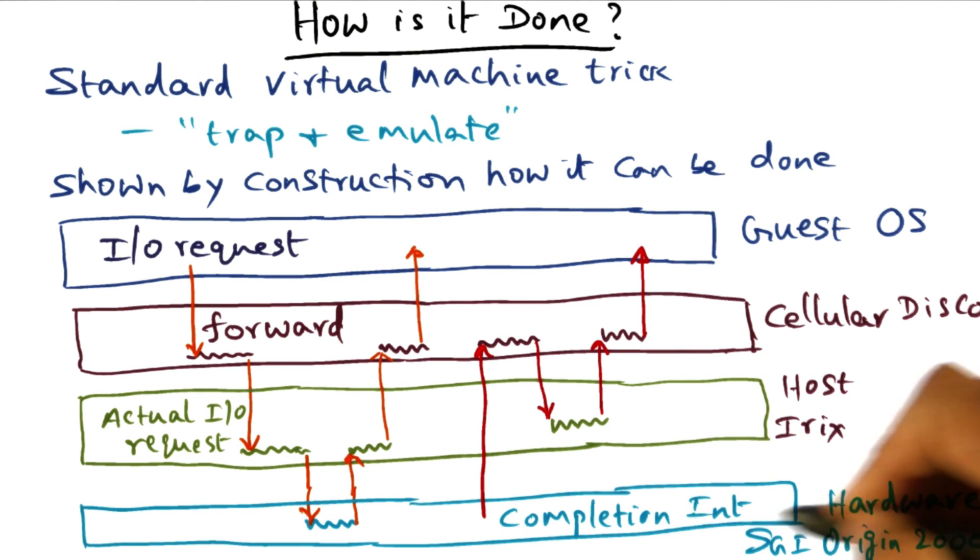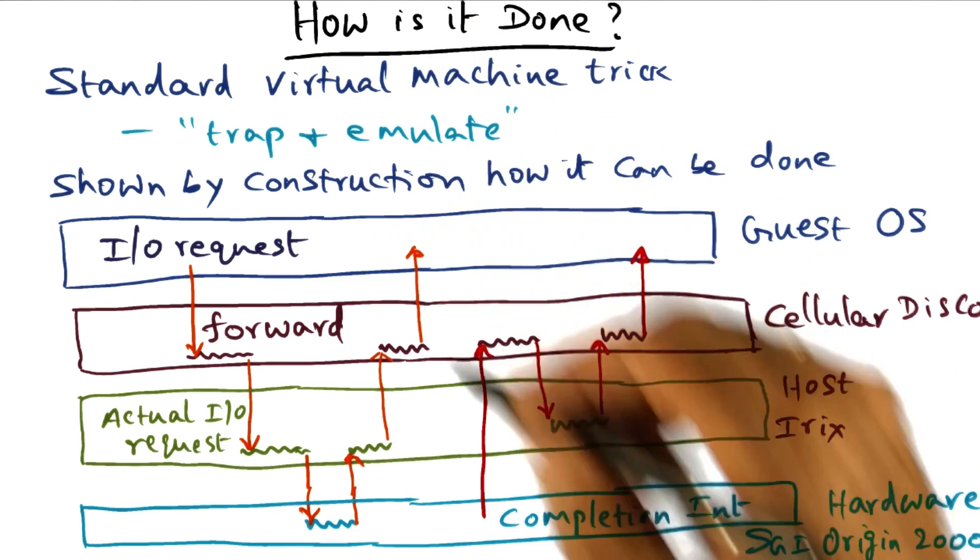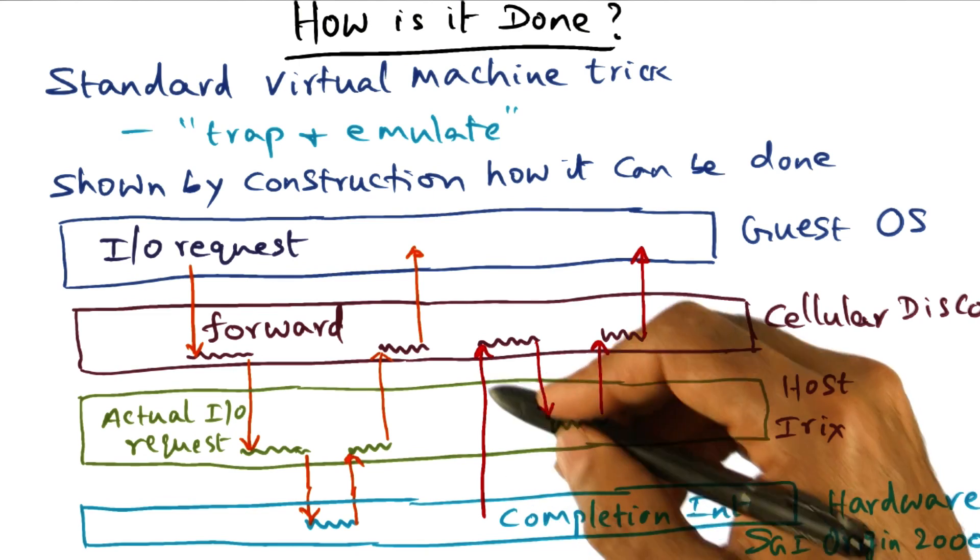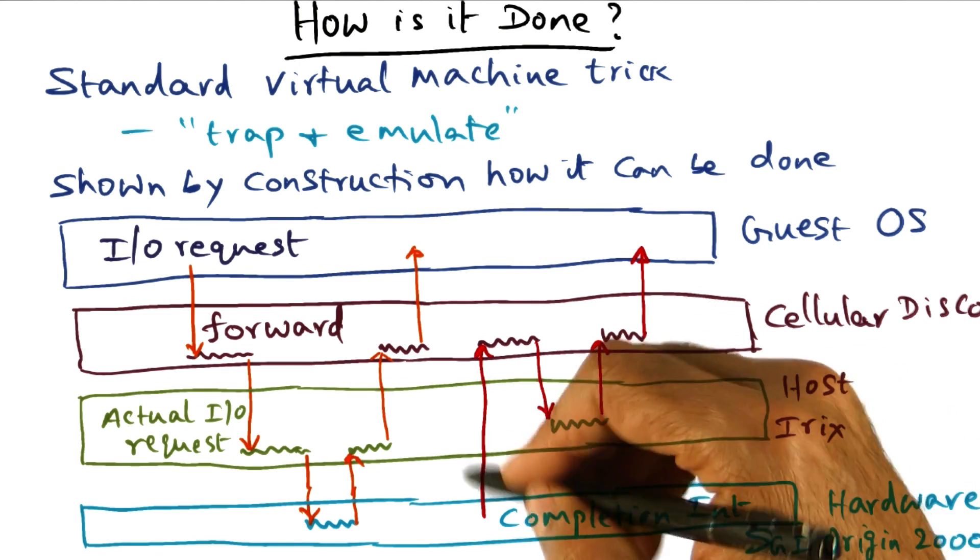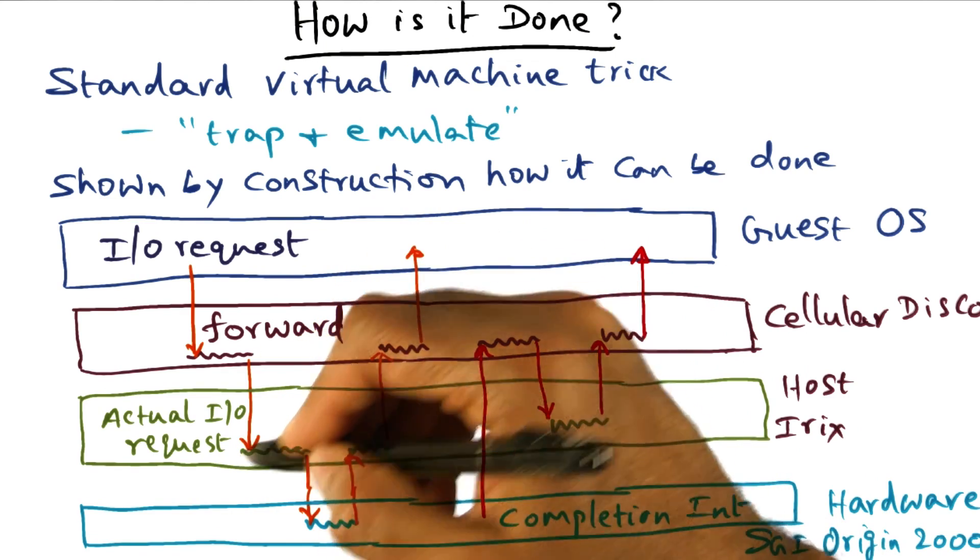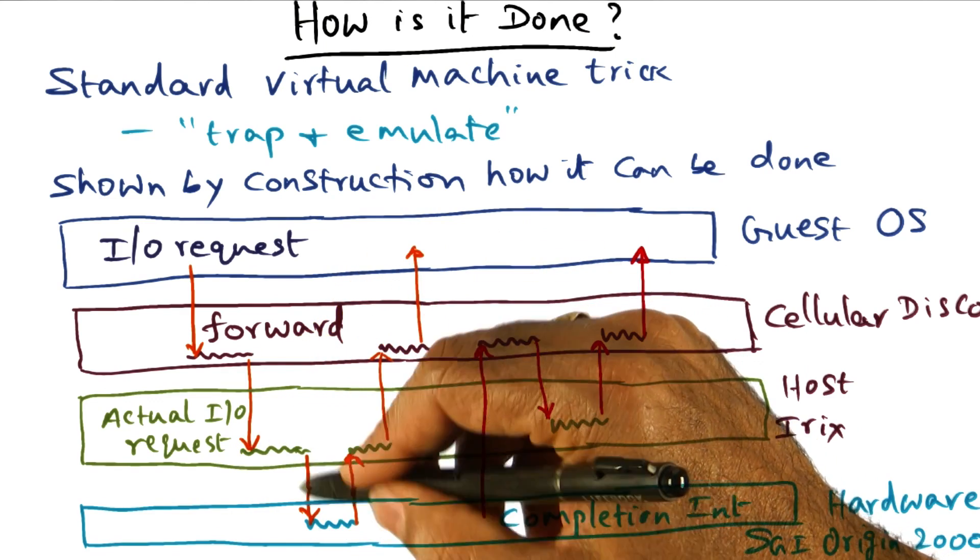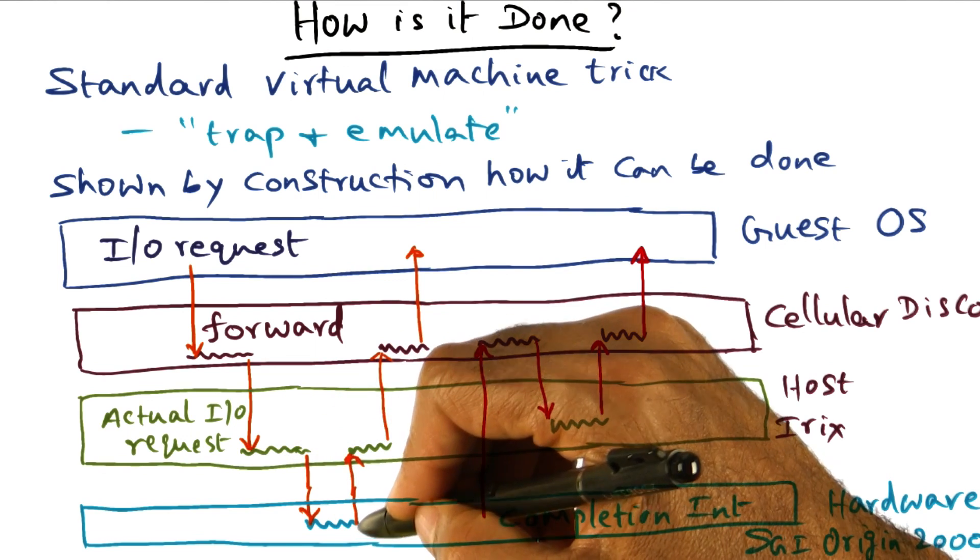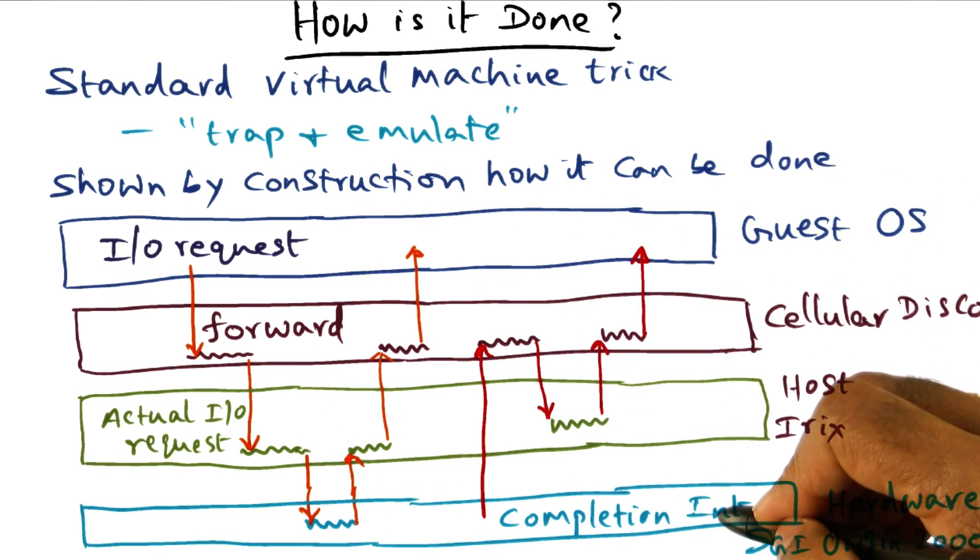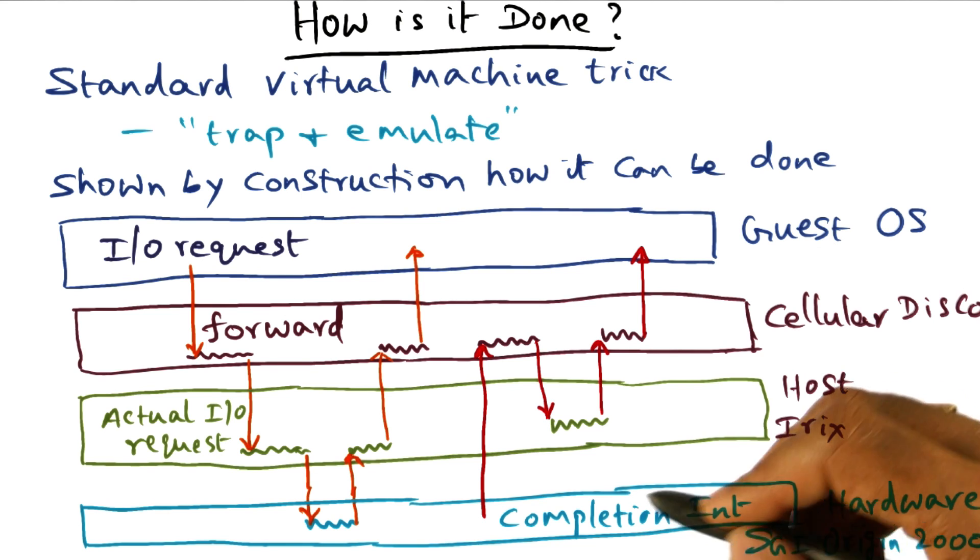Now what happens when the I/O request actually completes? This is where the trick comes in of trap and emulate. Because Cellular Disco has made it appear that this request is really coming from it, when it gave this I/O request, it installed the place that needs to be called in the VMM layer.